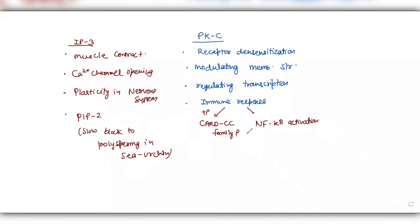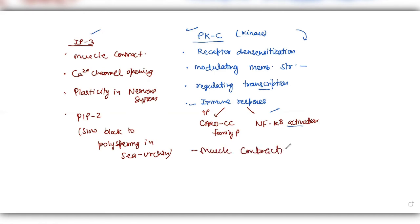Now let's see the importance of protein kinase C. PKC phosphorylates a wide range of proteins. For instance, in immunology, when you study the card CC family or NF-κB activation, protein kinase C phosphorylates and activates those kinase enzymes. PKC causes receptor desensitization, modulates membrane structures by phosphorylating various proteins, regulates transcription, has a very large role in immune response, and also participates in muscle contraction — whether eye muscles, chest muscles, or various other types of muscles.